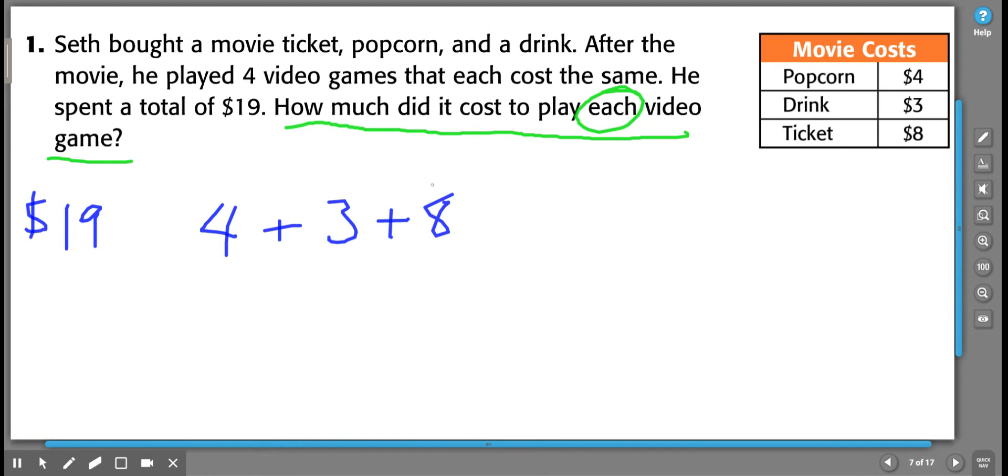All right. And then he played those video games. So I need to find out how much he spent on the video games. He spent a total of $19. Well, I know that what he had left over is whatever the popcorn, drink, and ticket cost when we subtract that from $19. So how do I show that?